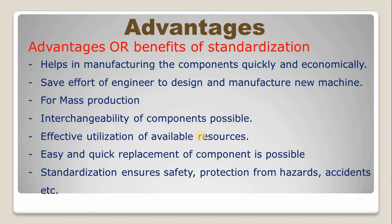The second advantage is that it saves the effort of the engineer to design and manufacture a new machine. Whenever possible, use readily available products in the market such as nuts and bolts, screws, washers, etc. We can purchase them from the market and use them for manufacturing. The third advantage is mass production — which is an important factor for any kind of industry. It is not always possible to manufacture small parts in-house, so they can easily purchase readily available small parts for assembly purposes.